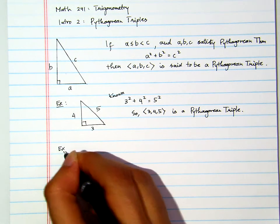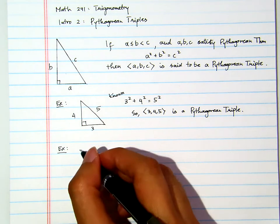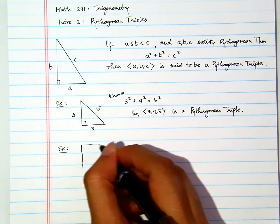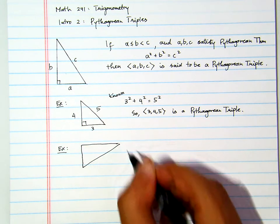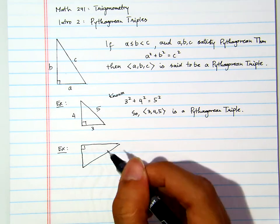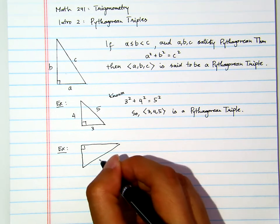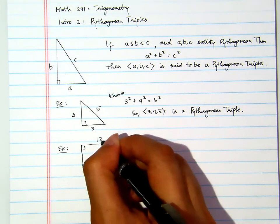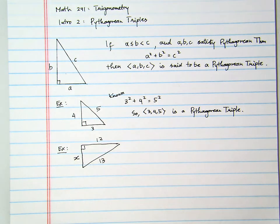As long as it satisfies Pythagorean Theorem, then those three numbers is a Pythagorean Triple. But remember that we write them in ascending order. Now, let's see another example. Suppose I have this right triangle here.